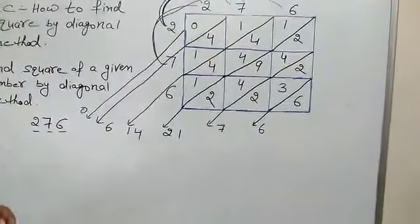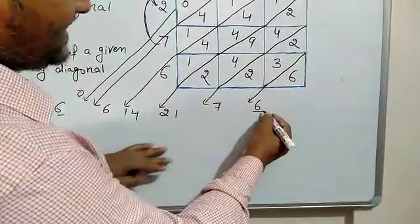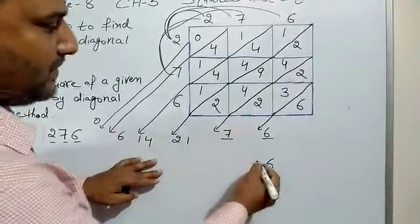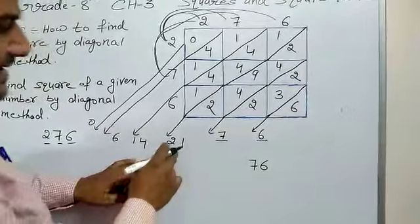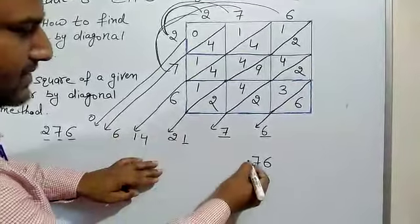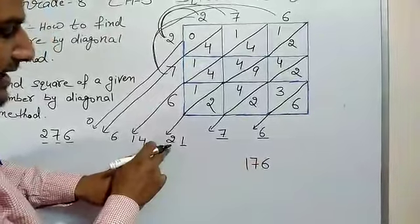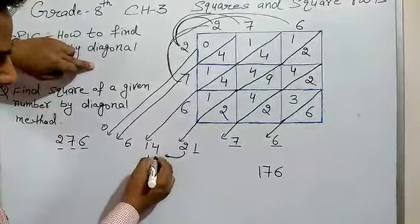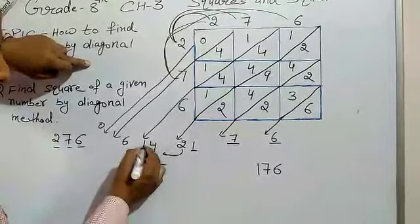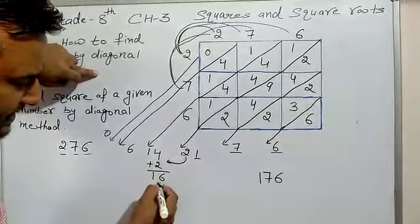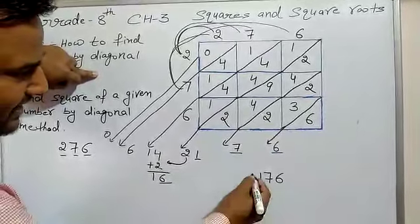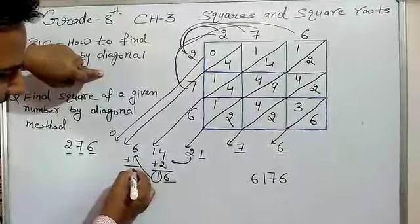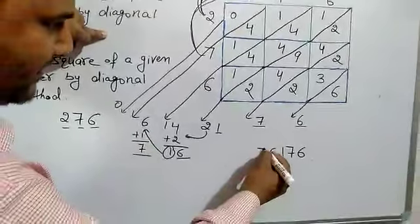Now we read off the final answer. The 6 at the unit place is written as such. The 7 is also at unit place, so we write 7. From 14, the unit place digit is 1, and 2 is carried over. Adding 2 to the next value: 14 plus 2 is 16. From 16, the unit digit is 6 and 1 is carried over. Adding 1 to the next value gives 7, which is written as such.